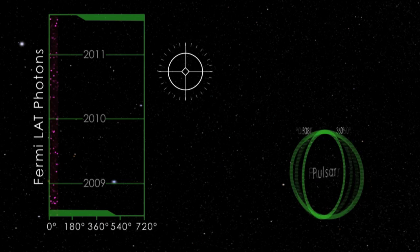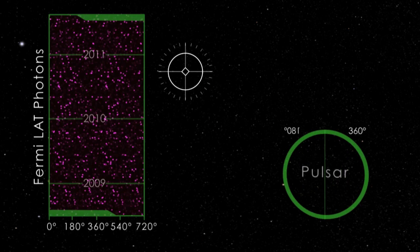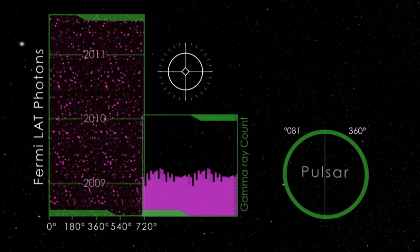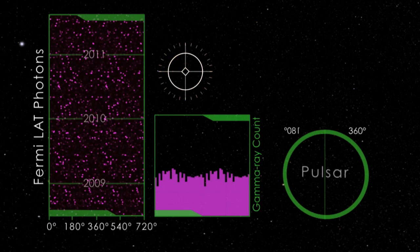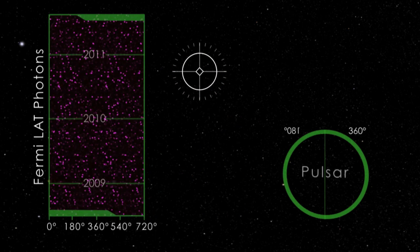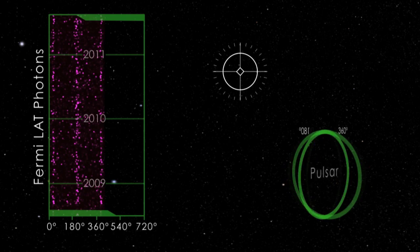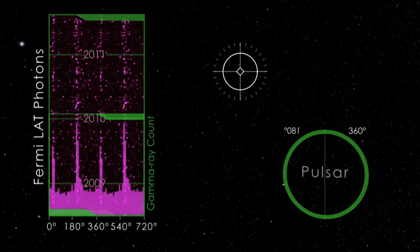Meanwhile, Fermi's calorimeter device absorbs the particles and measures their energy. By painstakingly calculating the location and power of each gamma ray hit, scientists use the Fermi data to build up a picture of the object that emitted them.